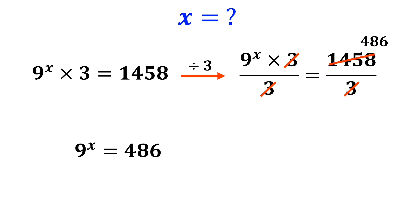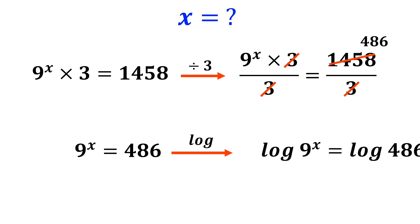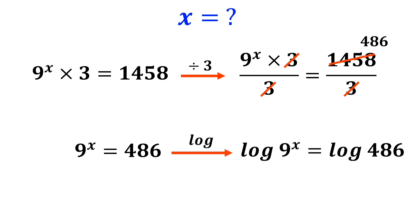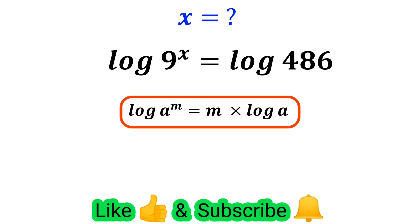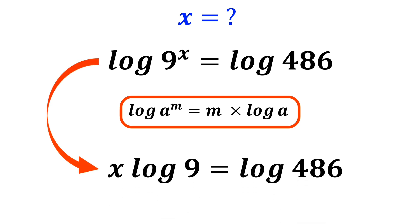Now we take the logarithm of both sides of the equation, which becomes log of 9 to the power of x equals log of 486. According to the rules of logarithm, log of a to the power of m equals m times log of a.